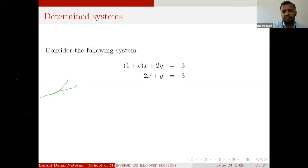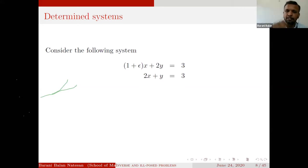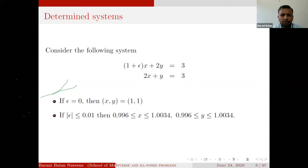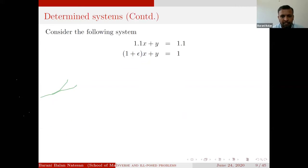For example, instead of X + Y in the coefficient matrix, write (1 + ε)X + 2. We vary ε and see what happens. If ε = 0.001, we expect similar solutions to ε = 0. For this problem, there is no issue — the system is well-posed. But consider the system 1.1x + y = 1.1 with another equation: the determinant of the matrix is 0.1 - ε. If ε = 0, the solution is x = 1, y = 0.